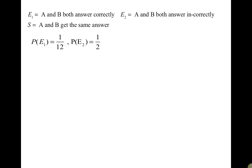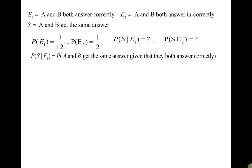S is the event that A and B get the same answer. We have P(E1) and P(E2), and we are thinking along the lines of Bayes' theorem. We know that S has happened, so we need P(S|E1) — the probability that A and B get the same answer given that they both answered correctly.